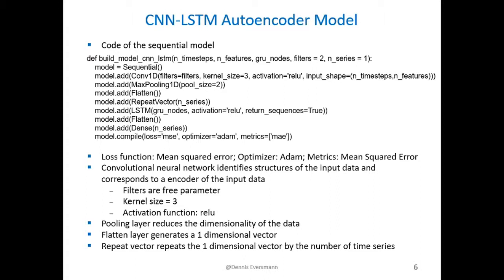The loss function, the optimizer and the metric is chosen the same as in the pure LSTM model. And for the convolutional layer I decided to have a kernel size of 3. The activation function is ReLU and the filter is a free parameter in order to scan for optimized parameter space.